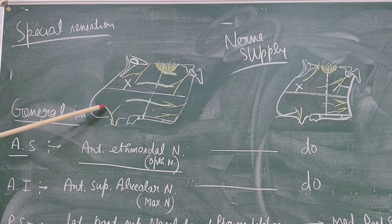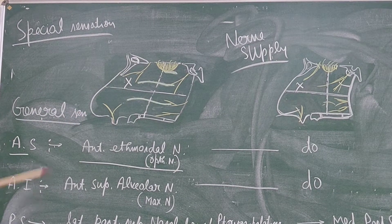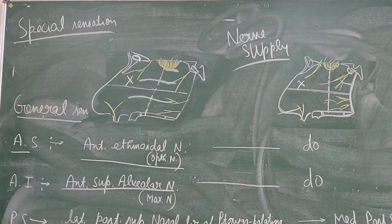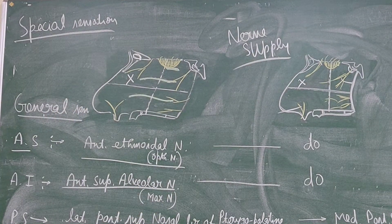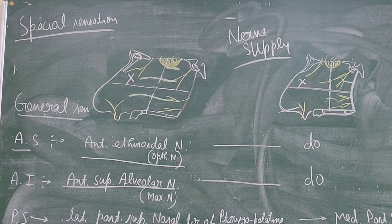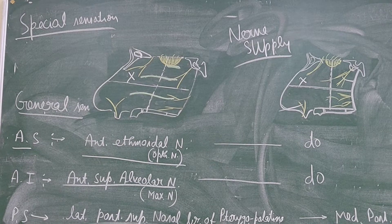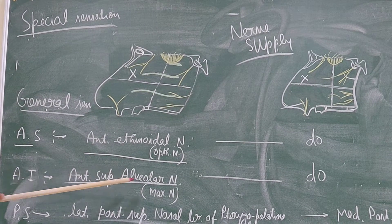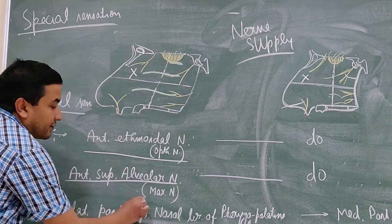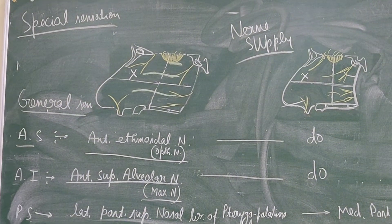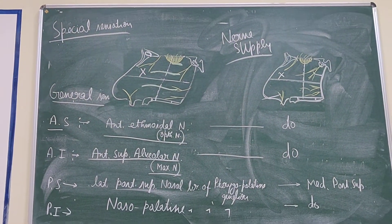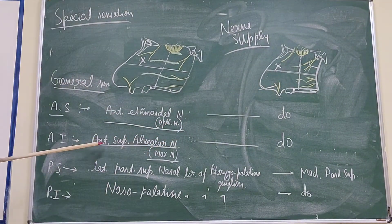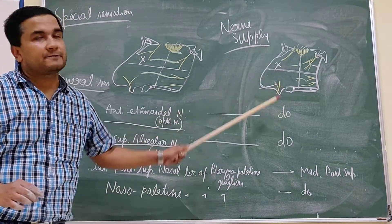Now the anteroinferior quadrant. This anteroinferior quadrant is supplied by the anterior superior alveolar nerve, which is a branch of the maxillary nerve. The same applies on the nasal septum — the same nerve, the anterior superior alveolar nerve.